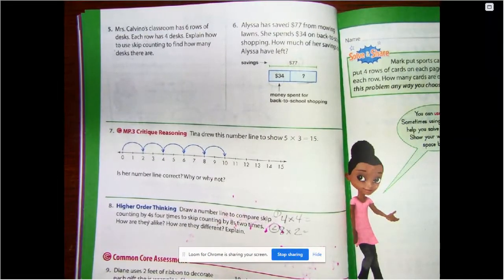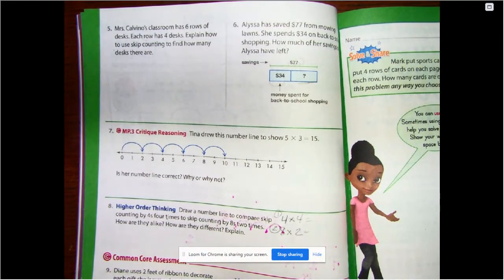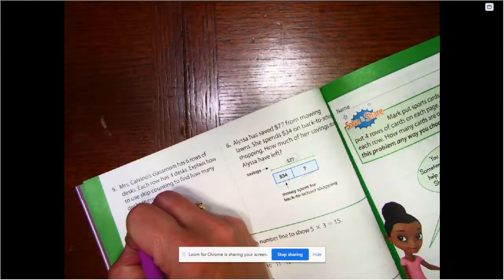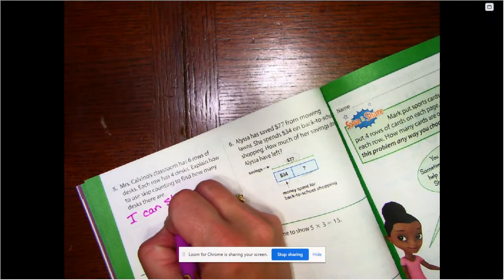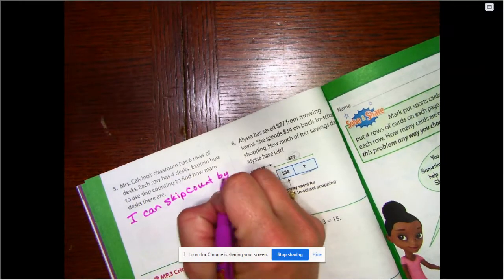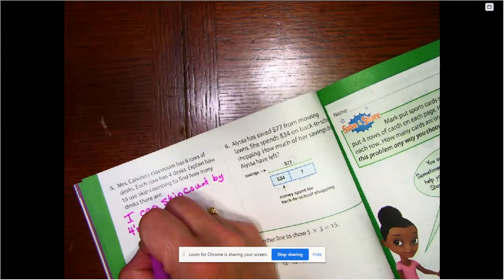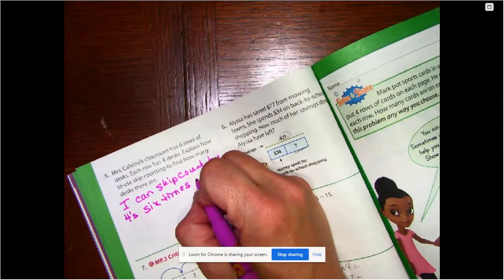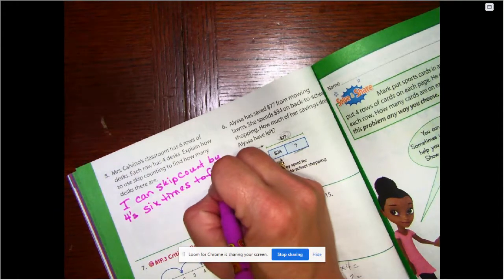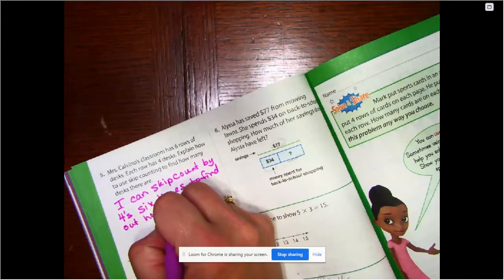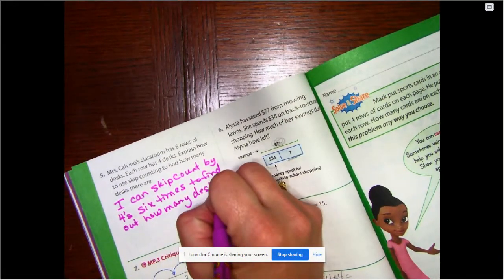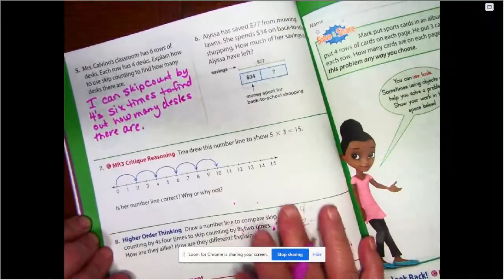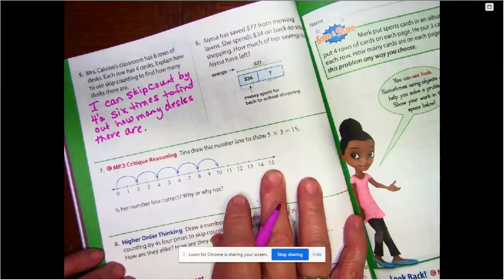Mrs. Calvino's classroom has six rows of desks. Each row has four desks. Explain how to use skip counting to find how many desks there are. Okay. Explain. So I can skip count by fours six times. Because I'm going to do it six times over and over. To find out how many desks there are.